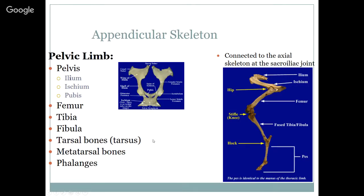The appendicular skeleton going to the pelvic limb. The pelvis has three parts: the ilium, which is the upper part closer to the back and cranial; the ischium, which is the rump part; and the pubis that goes in between. This pelvic limb is connected to the axial skeleton at the sacroiliac joint between the ilium and the sacrum. We'll also talk about the femur, tibia, fibula, the tarsal bones which are the ankle bones, the metatarsal bones which are the foot bones, and the phalanges which are the toes.